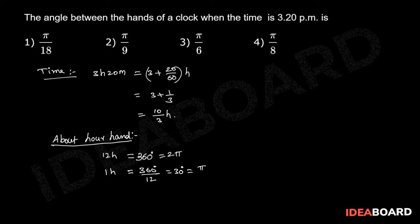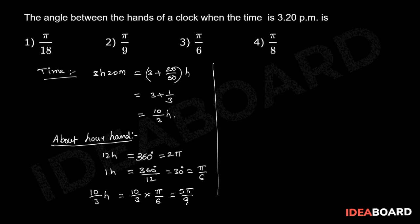Now the hour hand at the time of 3 hours 20 minutes, that is 10 by 3 hours. The hour hand covered 10 by 3 into pi by 6 radians, that equals 5 pi by 9 radians. Now about the minute hand.